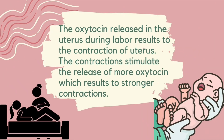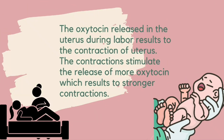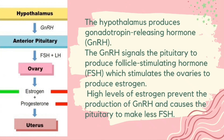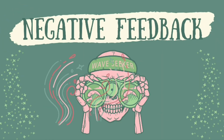The oxytocin release in the uterus during labor results in contraction of the uterus. The contractions stimulate the release of more oxytocin, which results in stronger contractions. The answer is positive feedback. The hypothalamus produces gonadotropin-releasing hormone (GnRH). The GnRH signals the pituitary to produce follicle-stimulating hormone (FSH), which stimulates the ovaries to produce estrogen. High levels of estrogen prevent the production of GnRH and cause the pituitary to make less FSH. The answer is negative feedback.